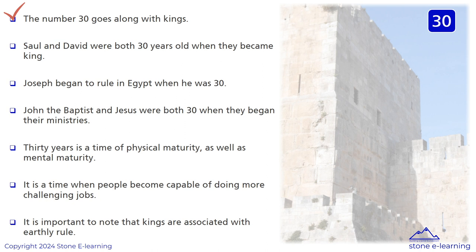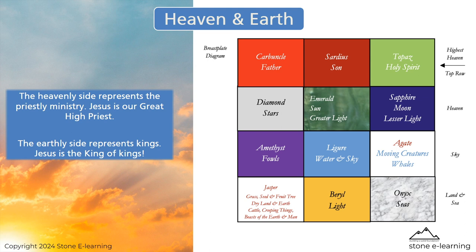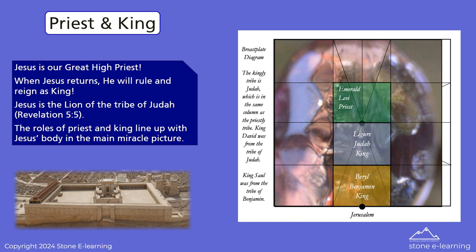The number 30 goes along with kings. Saul and David were both 30 years old when they became king. Joseph began to rule in Egypt when he was 30. John the Baptist and Jesus were both 30 when they began their ministries. The number 30 is a time of physical and mental maturity — a time when people become capable of doing more challenging jobs. Kings are associated with earthly rule. The heavenly side represents the priestly ministry; Jesus is our great high priest. When Jesus returns, he will rule and reign as king — he is the Lion of the tribe of Judah, Revelation 5:5. The roles of priest and king line up with Jesus' body in the main miracle picture.